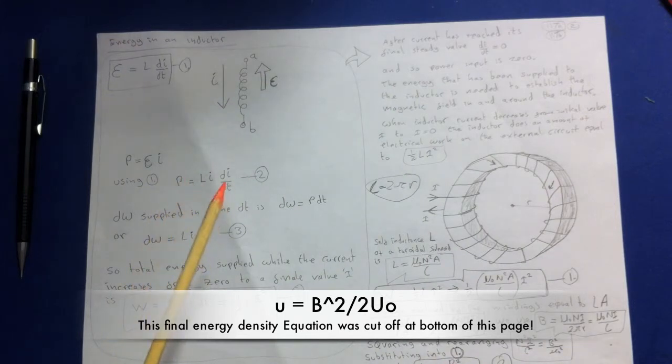This is analogous to the expression of energy per unit volume in the electric field of an air capacitor. Remember, the air capacitor was a half ε₀ E squared. Well, we've got here a half B squared over μ₀, so they're very similar in form.